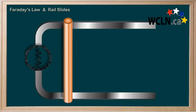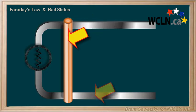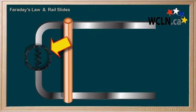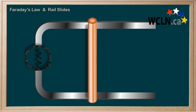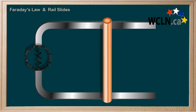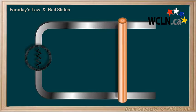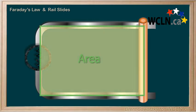Let's consider a unique contraption that combines our typical flux version of Faraday's law with our Motional EMF concept. This contraption is called a rail slide. We have two metal rails — conductors — connected at the end. We have the slide, which can move along the rails, sliding to the left or to the right. It's basically a fancy way to make a loop that changes area as the slide moves.